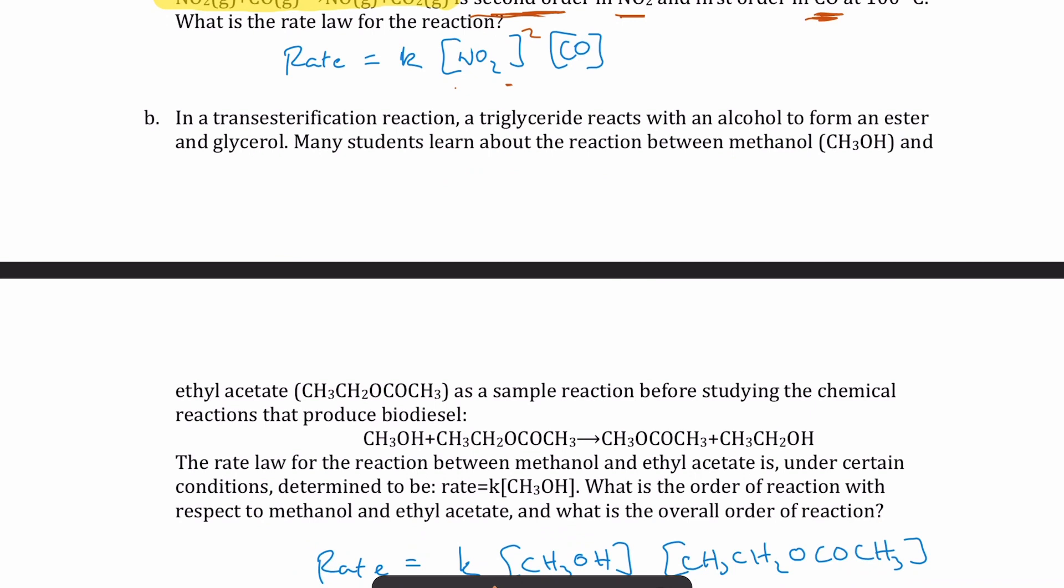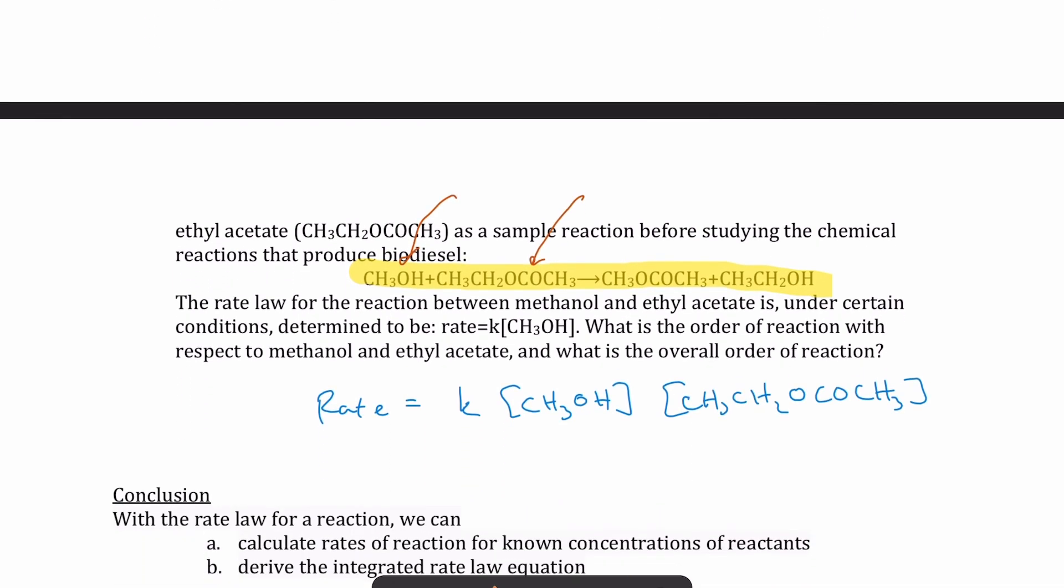Here's the second question. It says you have a reaction called a transesterification reaction. But the key here is this equation, which is the reaction equation. So you have two reactants there. One reactant is methanol, which is CH3OH. And the other reactant is something called ethyl acetate, which is a type of molecule called ester, something you'll learn more in organic chemistry. What we were told is that the rate law for the reaction is here, K times CH3OH. What they're asking us is, what's the order of the reaction with respect to each of the reactants?